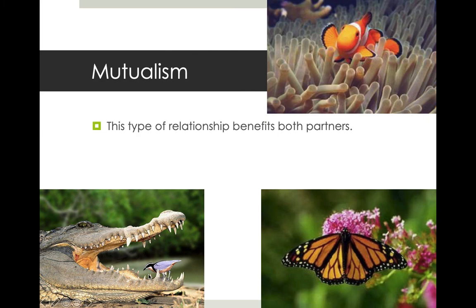This relationship continues because both species benefit — it would be easy for the alligator to eat the bird, but instead they've co-evolved to maintain this relationship. The alligator knows this bird species will clean his teeth; the bird knows it can safely get a free meal. These evolutionary relationships exist because of the benefits to each other.